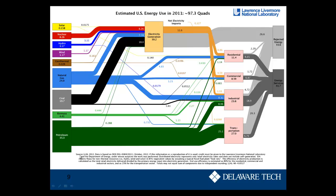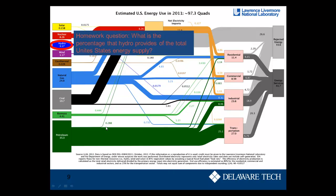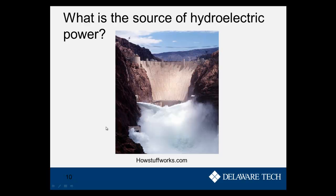Now that we've covered geothermal, let's switch to hydropower. For homework we want to figure out what percentage hydropower is of the total United States energy supply. A hydroelectric dam takes water and makes electricity — it takes high water from the reservoir behind the dam and lets it fall, capturing that energy. Falling water turns a turbine, like a water wheel, but instead of a wheel we're turning a turbine that makes electricity with a generator.